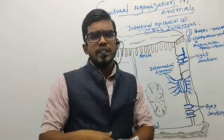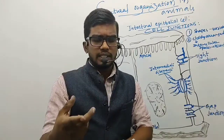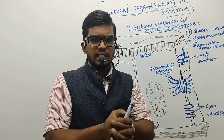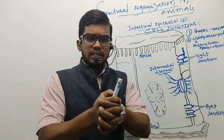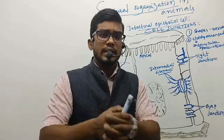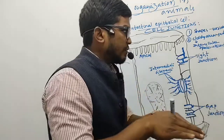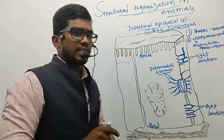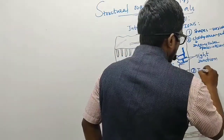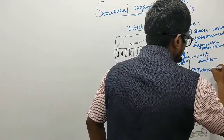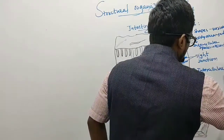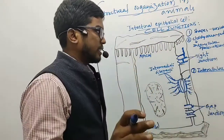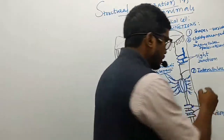Because the intercellular spaces are practically absent, the cells are very closely placed with each other, so there is very little amount of intercellular matrix between the cells. This intercellular matrix consists of a carbohydrate called hyaluronic acid.